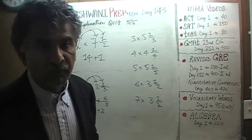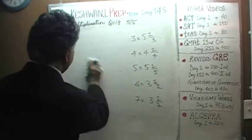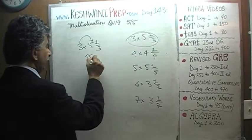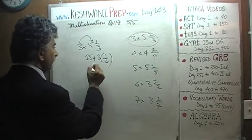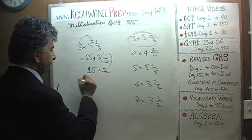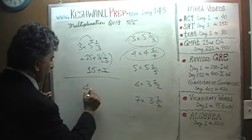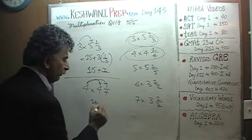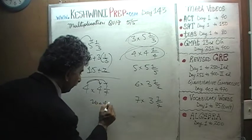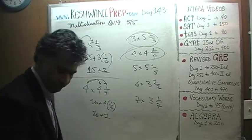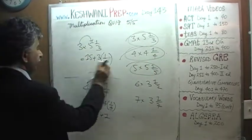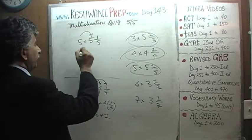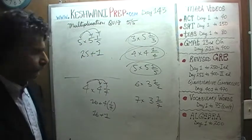They reach for the calculator, but there's no need for the calculator — these are very simple problems that should take no more than a couple of seconds each. Three times five and one third: three times five is fifteen, and three one-thirds is one, so it's fifteen plus one, which is sixteen. Four times four and one quarter: four times four is sixteen, four quarters make a whole, so it's sixteen plus one.